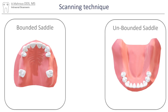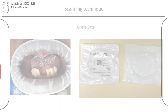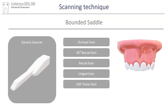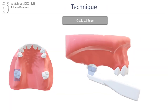We will go over the scanning technique for bounded and unbounded saddles. It's important to adequately retract the tissues to facilitate scanning the border tissues. Let's start with the bounded saddle. In these cases, we will be doing an occlusal scan followed by a 45 degree buccal scan, a buccal scan, a lingual scan, and a soft tissue scan. We will start with the occlusal scan.